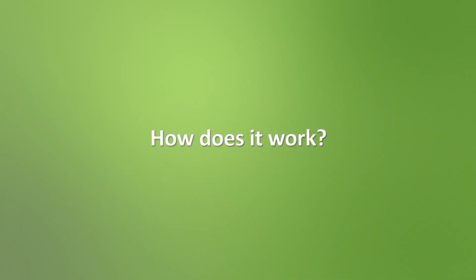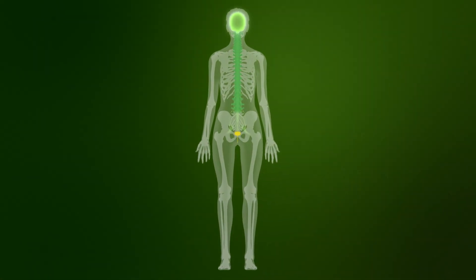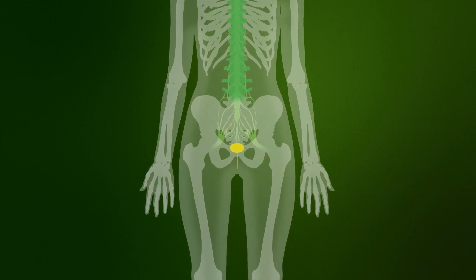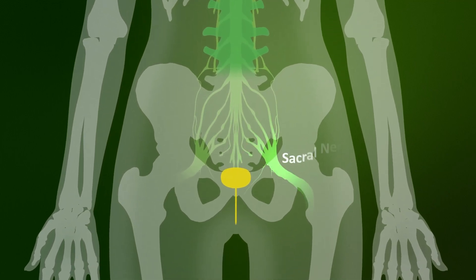So how does Exonix SNM therapy affect the communication between the brain, bladder, and bowel? The sacral nerve is located in the pelvic area and plays an important role in communication between the brain, bladder, and bowel.